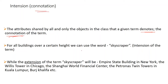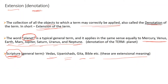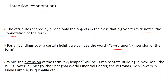For all buildings over a certain height, we can use the word 'skyscraper'. So we have the Empire State Building in New York, the Willis Tower in Chicago, the Shanghai World Financial Center, Twin Towers, Burj Khalifa, etc. We have given all these buildings one name — skyscraper. This is the intention, or connotation, of the term.